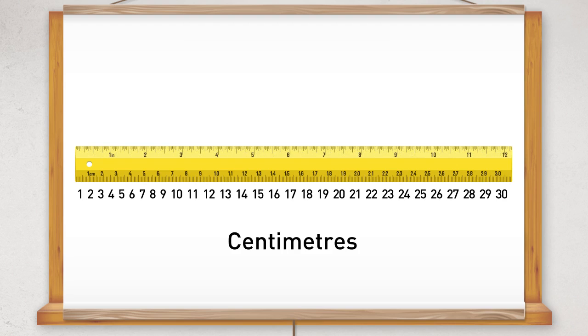Some rulers also show imperial units as well as metric. Imperial measurements that you might see on a ruler are feet and inches.